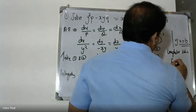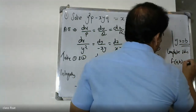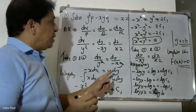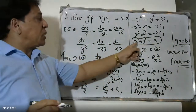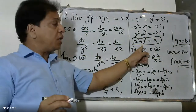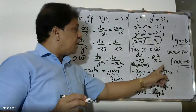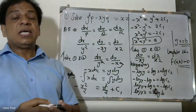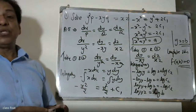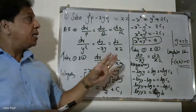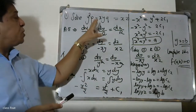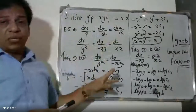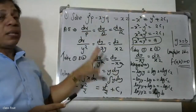The complete solution is f(a, b) equals 0, where a is x² plus y² and b is yz. So the solution to the university question y²p minus xyq equals x is f(x² plus y², yz) equals 0.